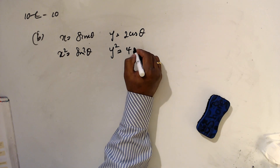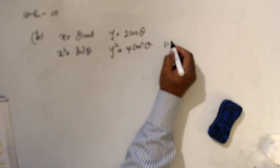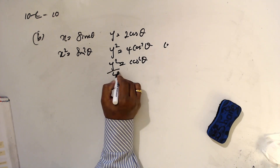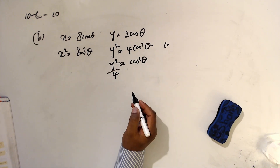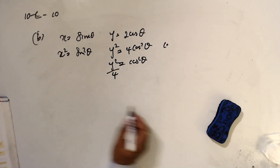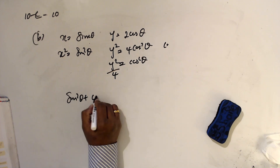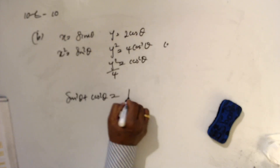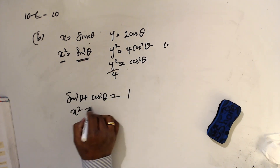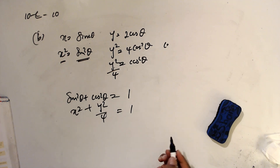Now y² = 4cos²θ, so cos²θ = y²/4, dividing both sides by 4. From the identity sin²θ + cos²θ = 1, substituting gives x² (for sin²θ) plus y²/4 (for cos²θ) equals 1.